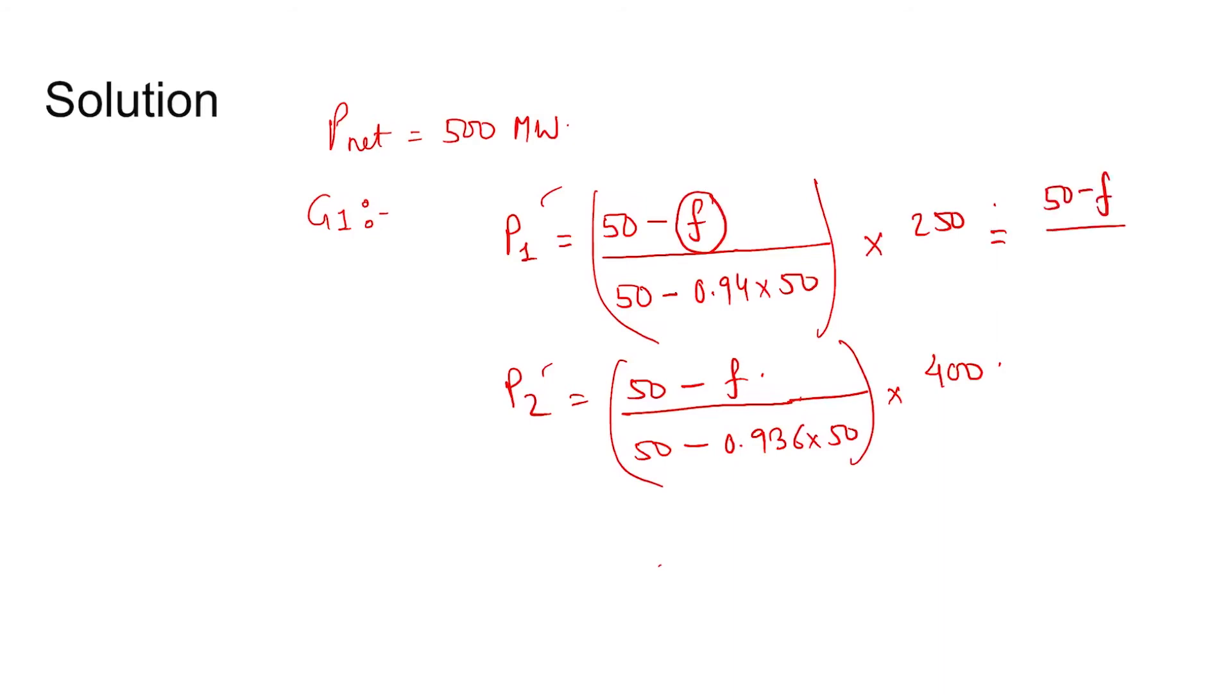This is equal to (50 - f) / 3 times 250 and this is equal to (50 - f) / 3.2 times 400. So we can write (50 - f) / 3 times 250 plus (50 - f) divided by 3.2 times 400.